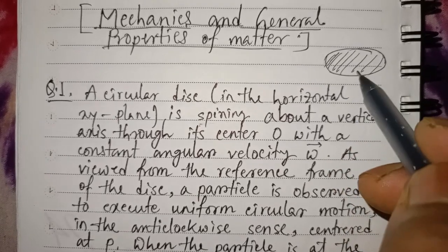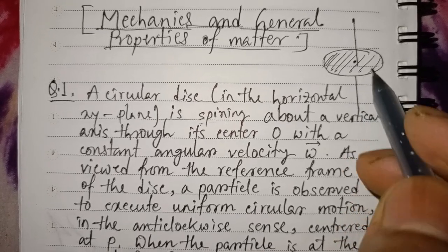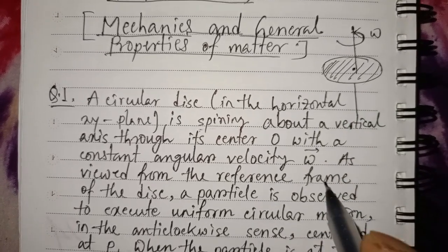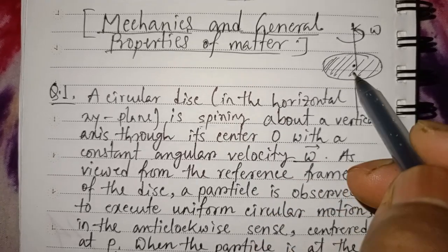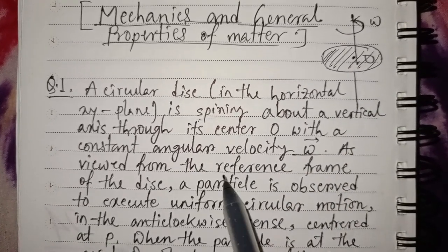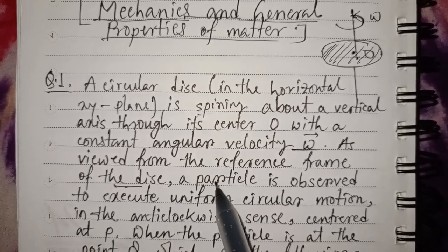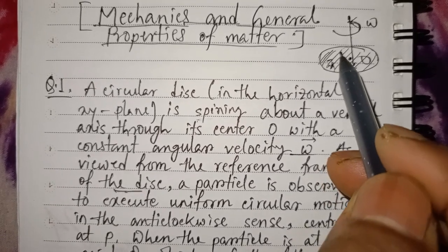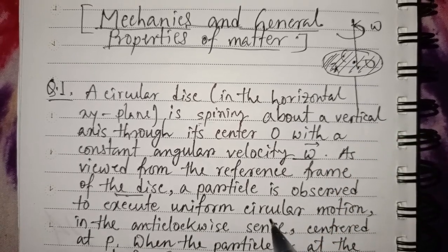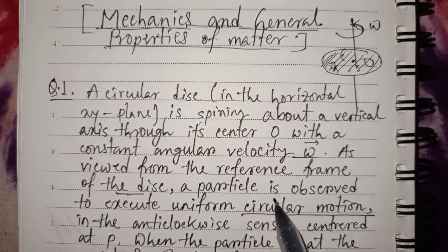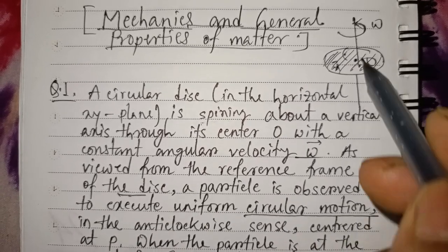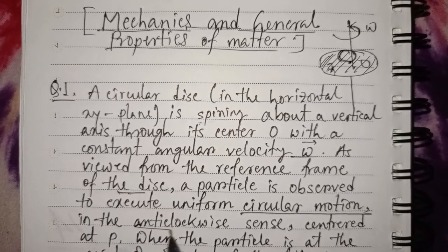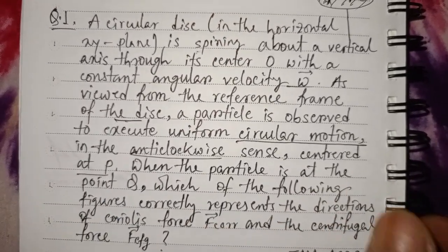If we add a horizontal Y axis, it is spinning. As viewed from the reference frame of the disk, the particle is observed to execute uniform circular motion. In this reference frame, the particle is doing circular motion, centered at P.